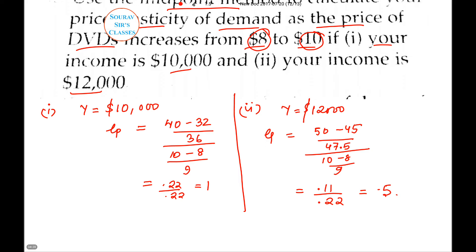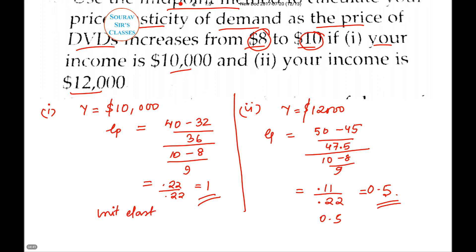So in the first case the result was 1 — unit elastic. In the second case the result is 0.5. Because 0.5 lies between 0 and 1, this figure indicates that the demand is inelastic.